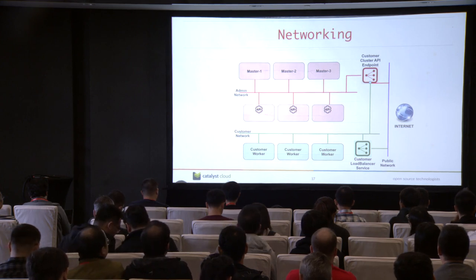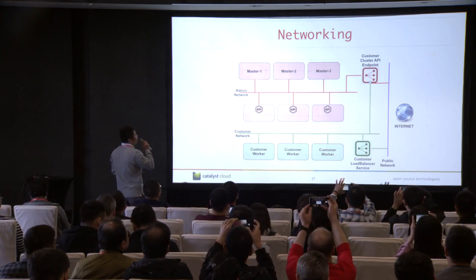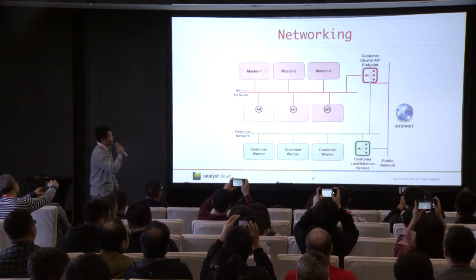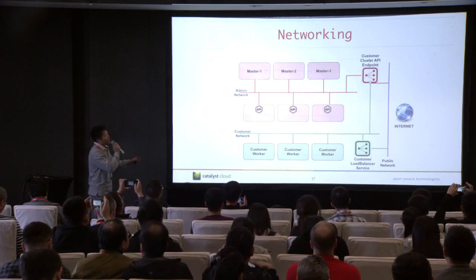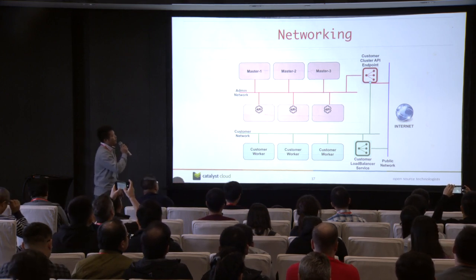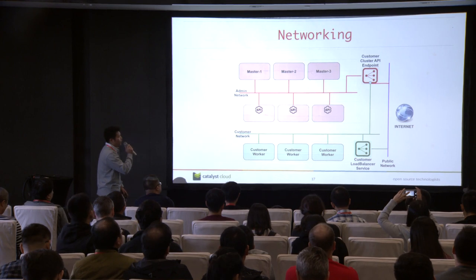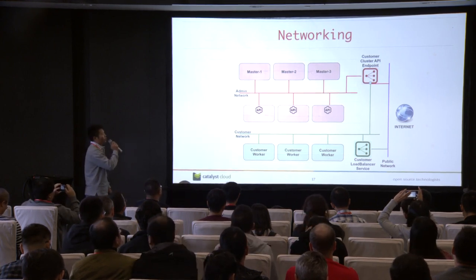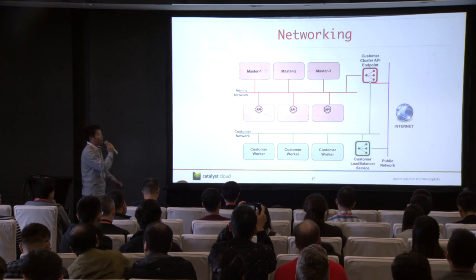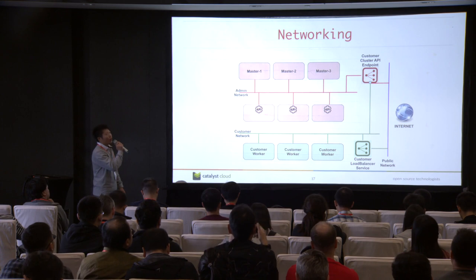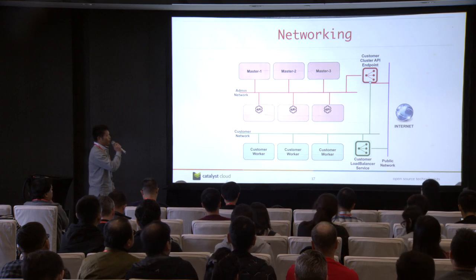Most of you may be interested in the communication between the seed cluster and the customer cluster. When the user creates the customer cluster, a load balancer corresponding to the Kubernetes service is created in the cloud admin tenant. It's connected to the customer's private network to make sure the worker nodes in the customer cluster can talk to the control plane services. There are different load balancers created corresponding to different customer clusters. If we associate a floating IP with the VIP port of the load balancer, the customer cluster can be exposed to the public.